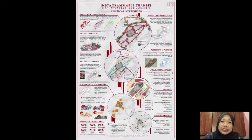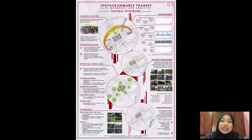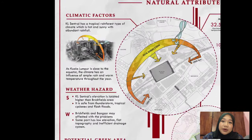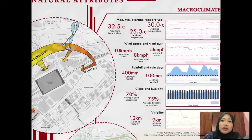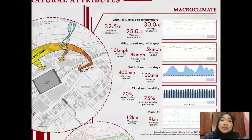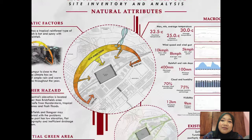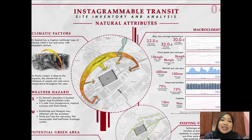Moving on to natural attributes, the first element is climatic factors. As Kuala Lumpur is close to the equator, the climate produces ample rain and warm temperature throughout the year. The average temperature of Kuala Lumpur from 2009 to 2020 is 30 degrees Celsius with 10 km per hour wind speed. The maximum rainfall throughout the year is 400 mm with an average humidity of 75%. Overall, KL Central has minimum chances to experience flash floods as it is located higher than the surrounding areas.